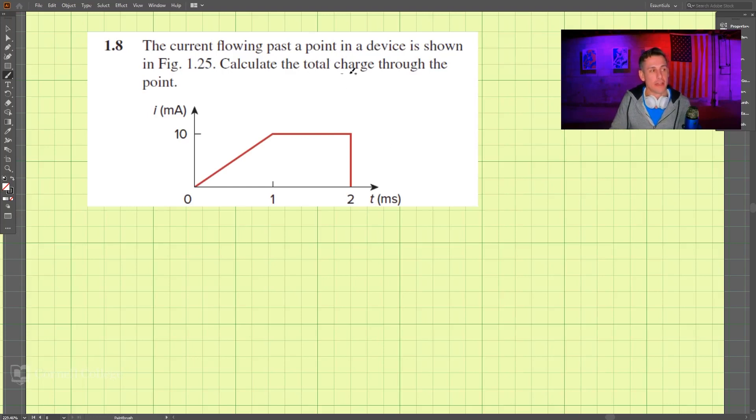In this example problem we're looking to calculate the total charge through this device. We're given the graph of the current and the time, and these are in milliamps and milliseconds. This would be right along this line here,